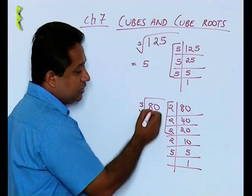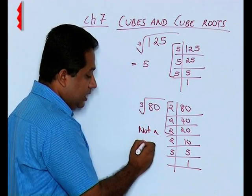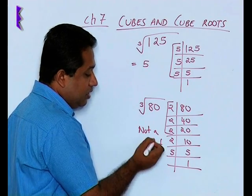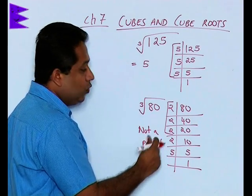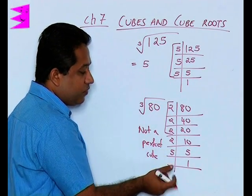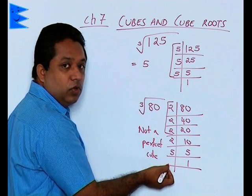So this number is not a perfect cube. So there are certain numbers which are perfect cubes, and if it is a perfect cube you will be able to make groups of 3. If you are not able to make groups of 3, as in this case we found that 2 and 5 do not form groups of 3, then those type of numbers are not perfect cubes.